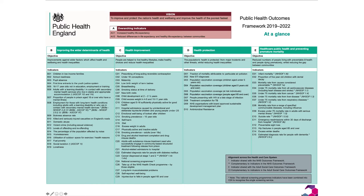The two key overarching indicators are: first, increasing healthy life expectancy — living longer but being healthy while doing so; and second, reduced differences in life expectancy and healthy life expectancy between communities, which is a health inequalities and health equity indicator. The domain columns are: B — improving the wider determinants of health; C — health improvement; D — health protection; and E — healthcare, public health and preventing premature mortality. These are the key areas of public health work.